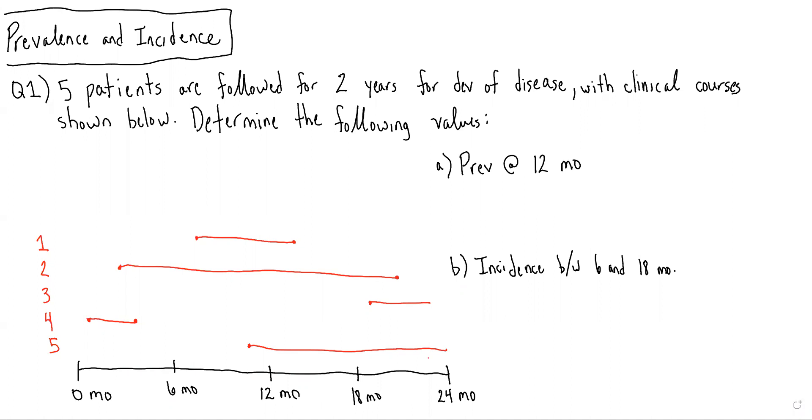So first, the prevalence at 12 months. Again, the prevalence is the number of patients with the disease at one point in time. So what we would do is draw a vertical line at 12 months, see how many patients are still alive in the population, and how many have the disease at 12 months.